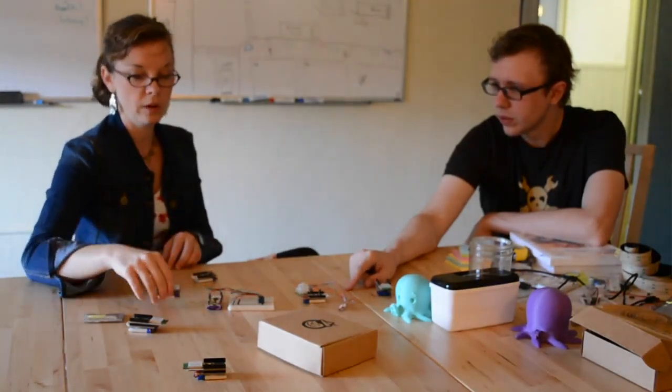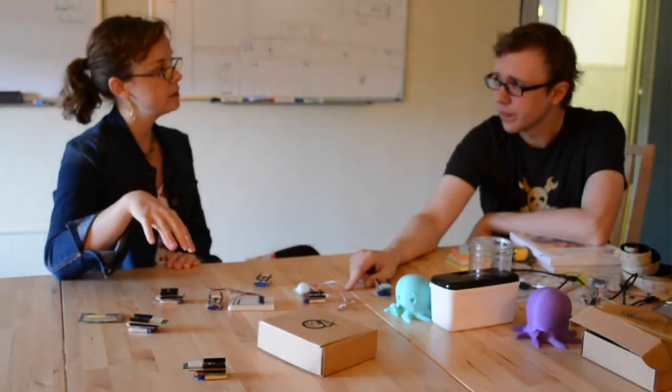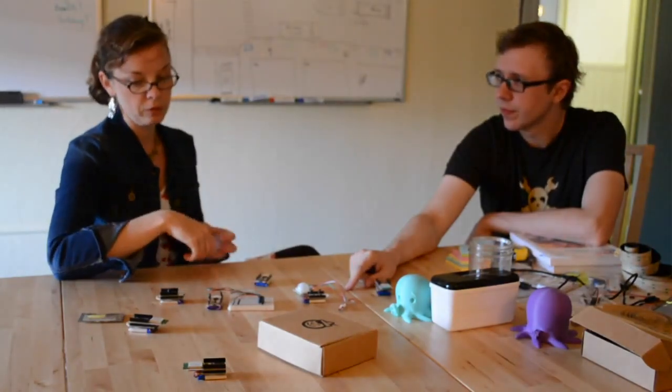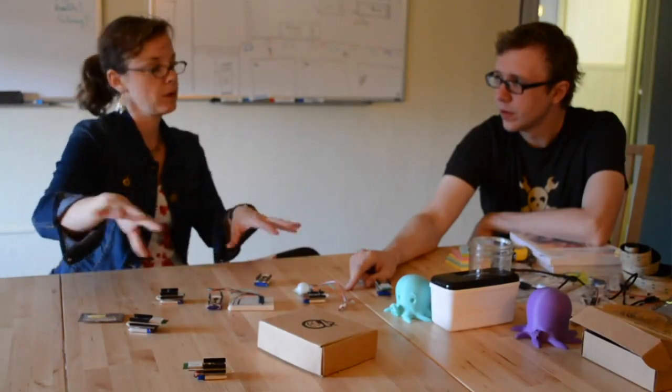If a sensor reading on one board gets above a certain predetermined threshold, it can trigger action on another board over here. And every board routes on behalf of the whole network. It's coordinator-less. So it makes it really lightweight, really resilient. If one node drops off the network, it's self-healing, it'll route around.